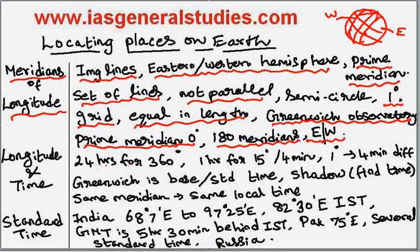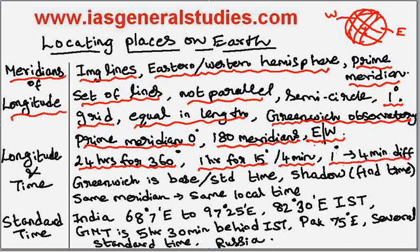The Earth takes 24 hours to complete one revolution, which means it covers 360 degrees. So it takes 1 hour for every 15 degrees, or 4 minutes for every 1 degree. Therefore, if there is a difference of 1 degree between two longitudes, it accounts to 4 minutes of time difference. Greenwich is the base and it is the standard time.